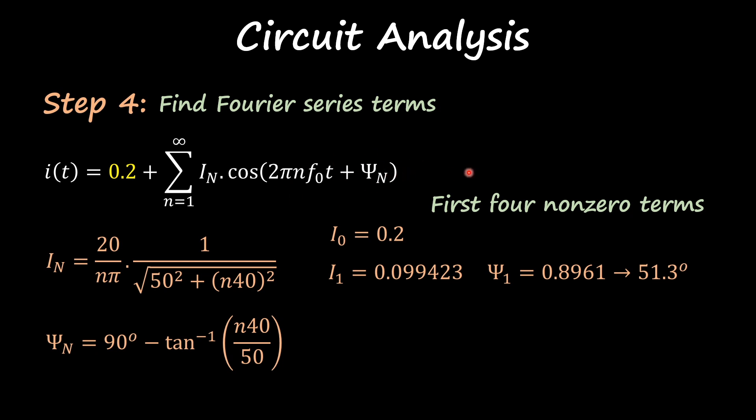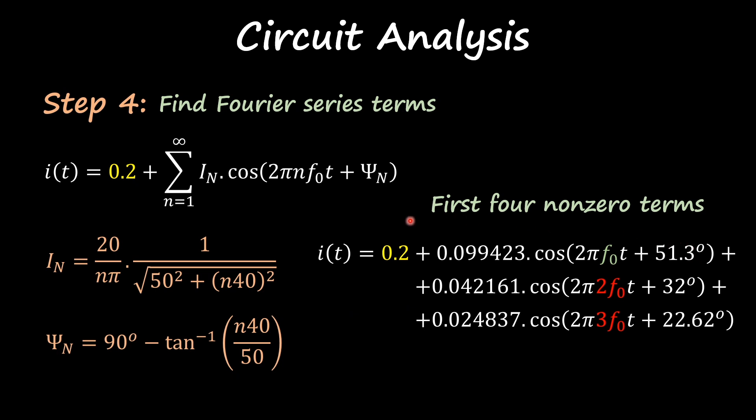Then n equal to 2, and then n equal to 3. Now all I need to do is to apply superposition, so add all those values together and you get your i(t) in this form. So how do I know now that this is going on the right direction? I'm going to do my final step, step number five, which is plot and simulate my answer.